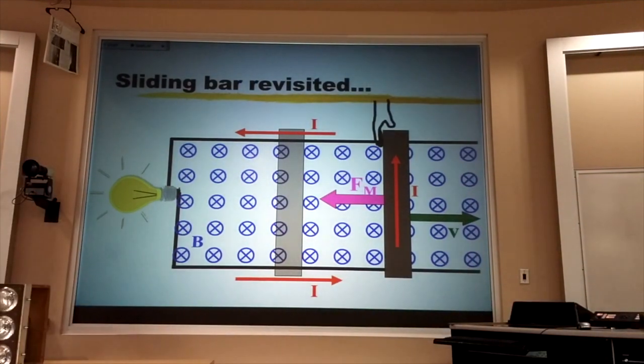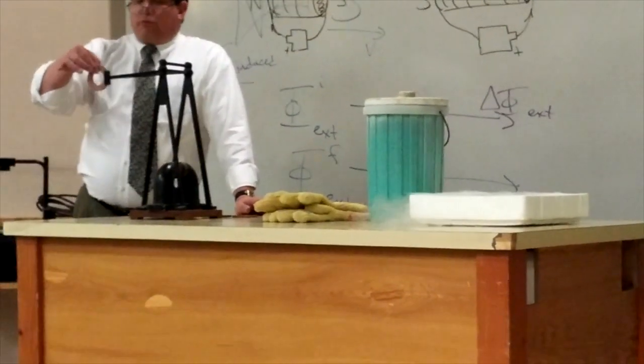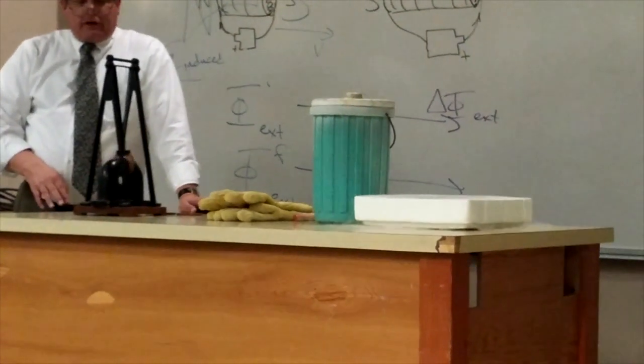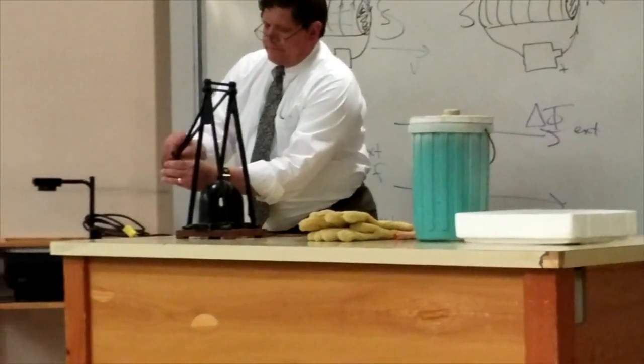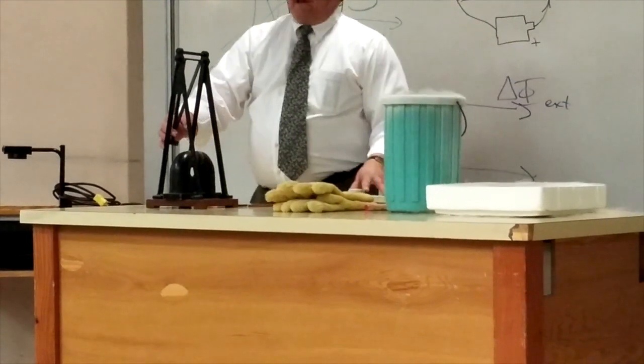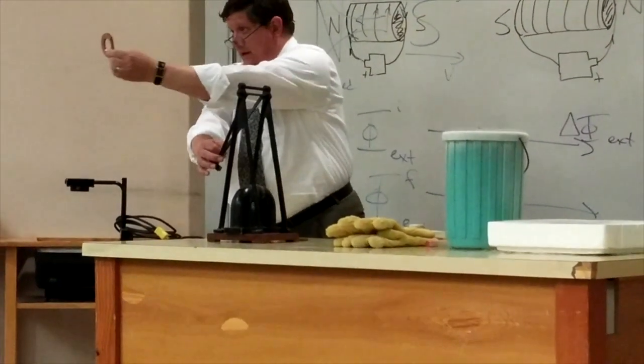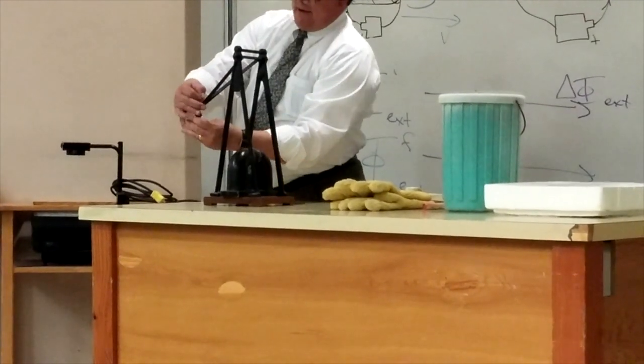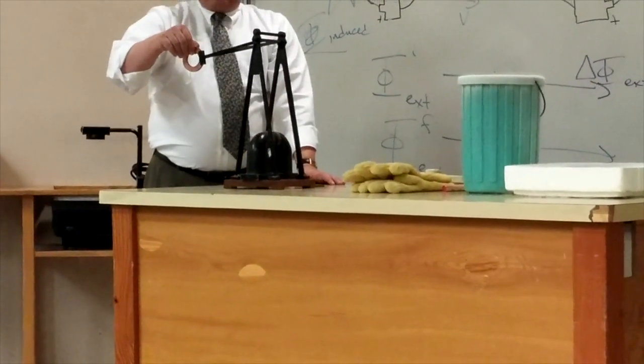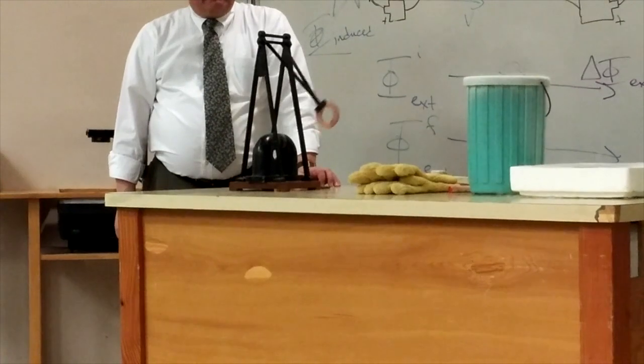Now we can use that same principle to develop what are called magnetic brakes. I have here a copper ring, and I'm going to swing that between the poles of this horseshoe magnet, and you see that it very quickly just stops. Now if I were to put that in liquid nitrogen and cool it down, it would stop even faster. I have here another ring. The people in front will testify that it has a cut in it, right? You'll be my witnesses. And in this case, I can't get any induced current set up, and so it just keeps on going.